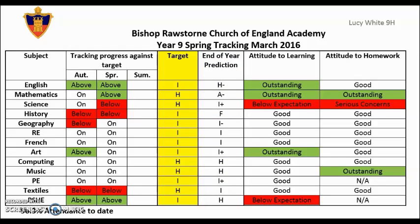If we then look at the next round of tracking in Spring, you can see that the student has the same target as they had at the start of Year 9, but their end-of-year predictions in some subjects may have changed. You can see in the left-hand columns how the student's progress has developed from one round of tracking to the next. In Mathematics, the student was on target but has now moved up to the Advanced level, so they are now above target. In Science, the student with a Higher target was on target in Autumn but is now below target, being predicted to be working at the Intermediate level.